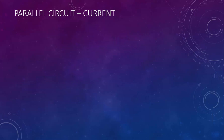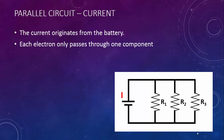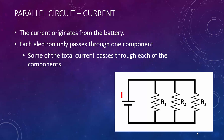Now let's take a look at current in a parallel circuit. Once again, the current originates from the battery. Each electron is only going to pass through one component or another, so only a portion of the total current passes through each component. This means that the current originating from the battery equals the sum of the individual currents.